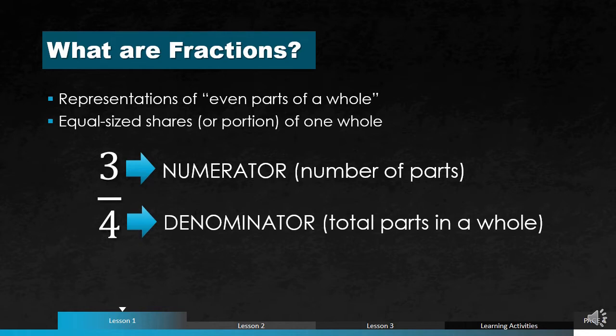For example, if you have a pie and you divide it equally into four parts, those four parts represent the denominator. And if you eat one portion of the pie — one of the parts — the portion that will be left would be equal to three-fourths.